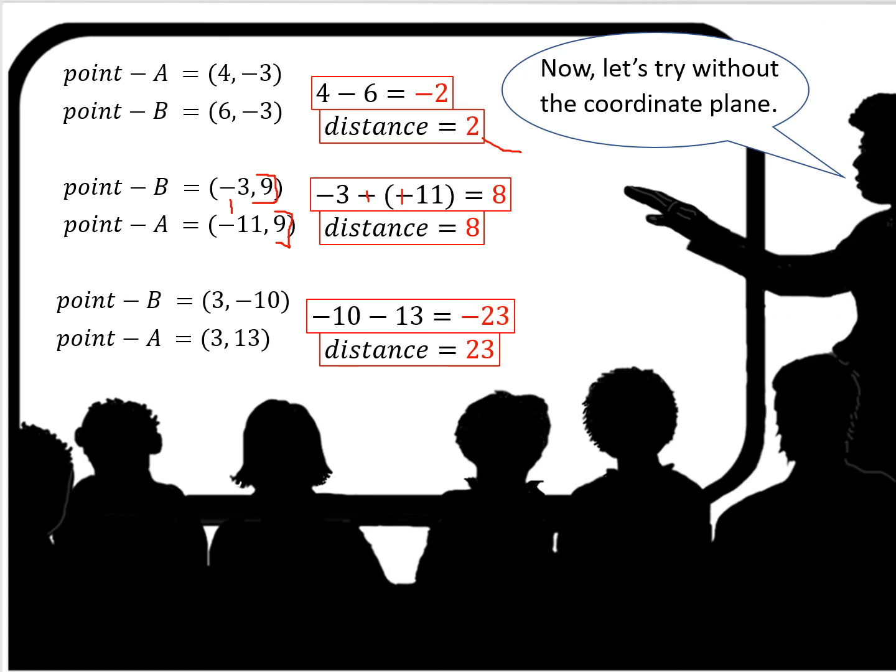So here we have point A and point B. B is 3, negative 10 and A is 3, 13. So negative 10 minus 13. Add the opposite sign. Negative 10 plus negative 13 is negative 23. The absolute value of negative 23 is 23. So the distance between B and A is 23 units.